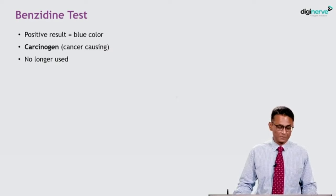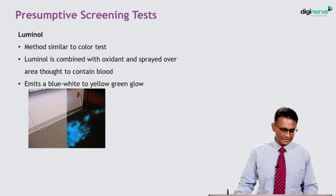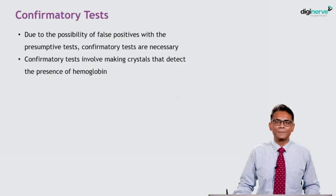The benzidine test is not done nowadays because benzidine is carcinogenic. It used to give a blue color for a positive result. The luminol test is a method similar to the color test. Luminol is combined with an oxidant and sprayed over the area thought to contain blood. It emits a blue-white to yellow-green glow. If blood is present it will glow — you can see a blue-white glow in the image.